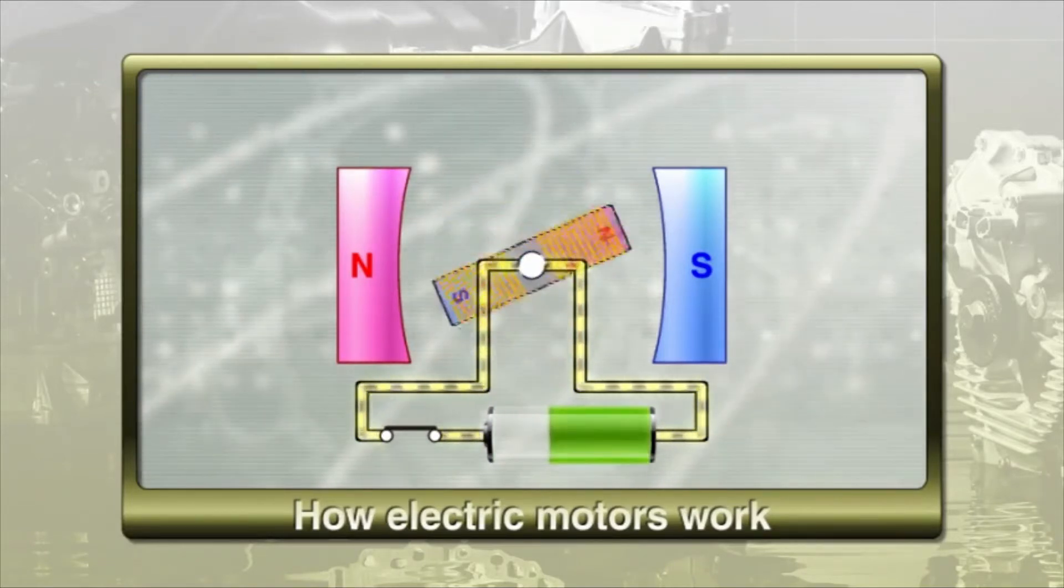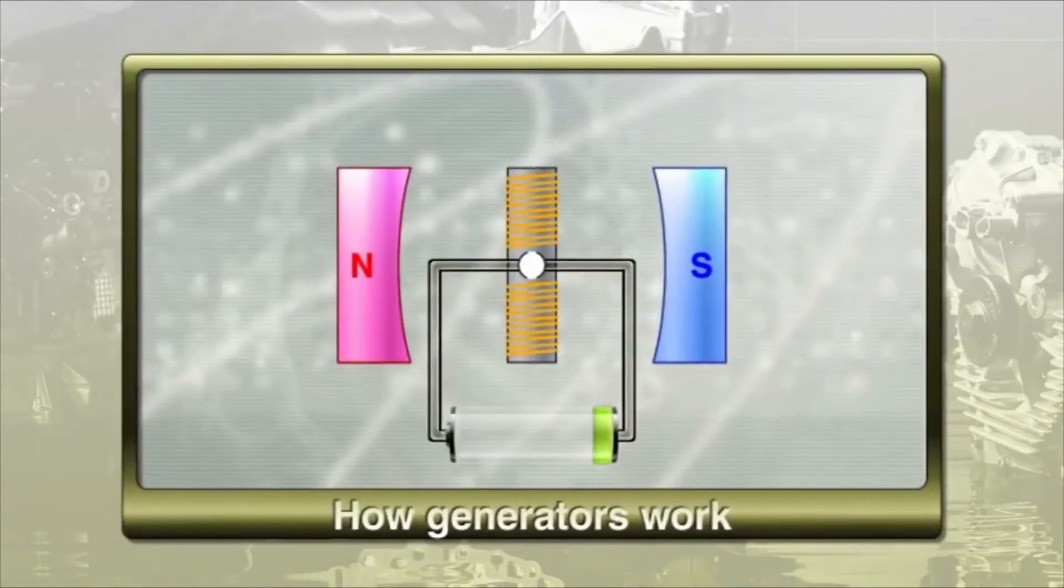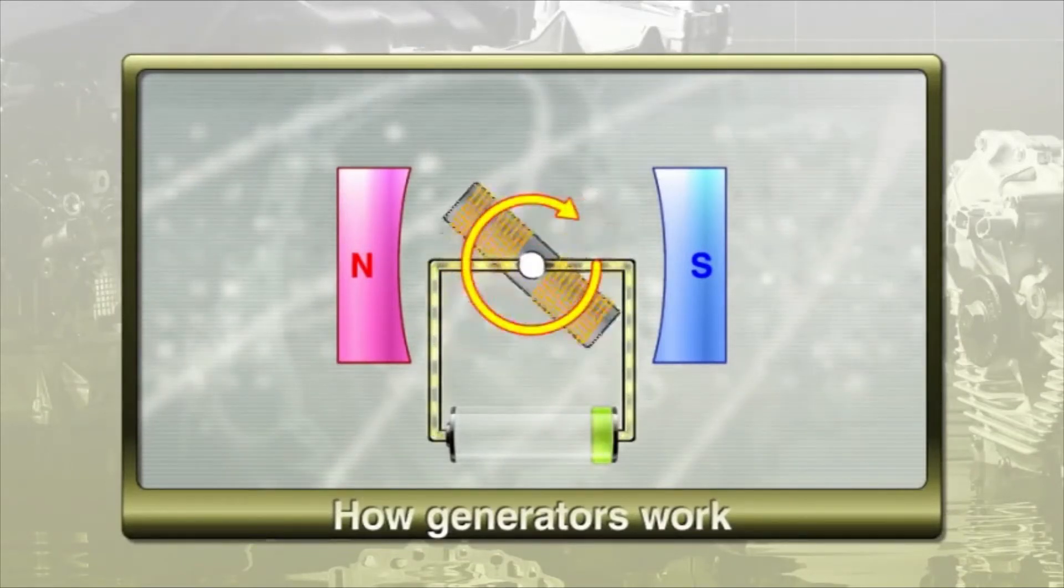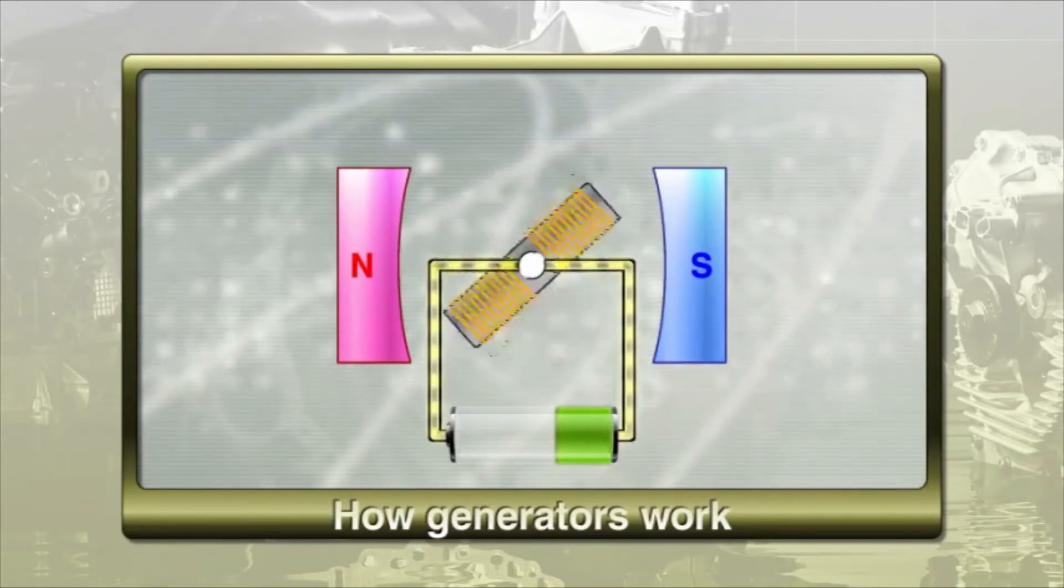Alternatively, when the motor functions as a generator, electricity is produced by the rotor's rotation around its axis. In addition, the mechanical resistance to the rotation is the braking power in regenerative braking.